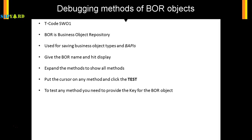Once you hit the Test button, it will ask for the keys for the BOR object. If it is a material master BOR object, it might ask you for the material number. If it is an invoice object, it might ask you for the invoice number. Or if it is a custom one, it might ask for some keys — it might be one field or a combination of multiple fields. In the subsequent video, I will show you a custom BOR object where we have three key fields, so we have to provide those values. It is like the input of the program.